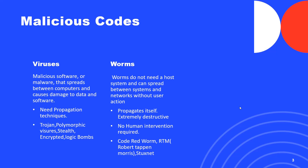Polymorphic viruses change their own code so that they can evade antivirus detection. Stealth viruses, as the name indicates, are a hidden type of virus.